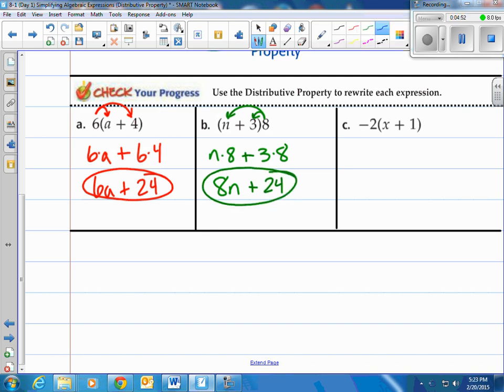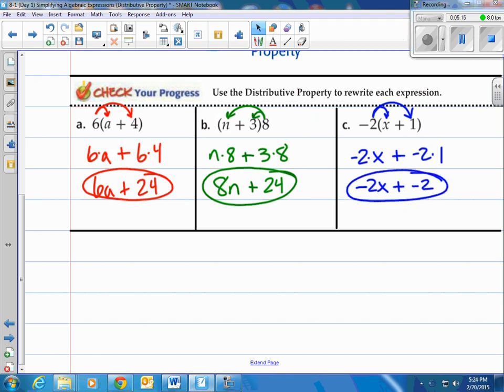And how about our last one here? Negative 2 times the quantity of x plus 1. So I can't add x plus 1, but I can do negative 2 times x and negative 2 times 1, and then add after that. So negative 2 times x plus negative 2 times 1. Negative 2 times x is negative 2x. And negative 2 times 1 is negative 2. And there you have it.